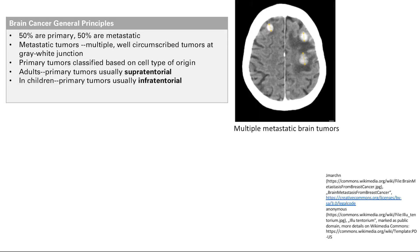Looking at metastatic first: on imaging, they're usually multiple and well-circumscribed. You see nice circles here, and they're at the gray-white junction. In contrast, primary tumors will usually just be single tumors. Metastatic are multiple tumors; primary tumors are single tumors, and they're classified based on the cell type of origin.